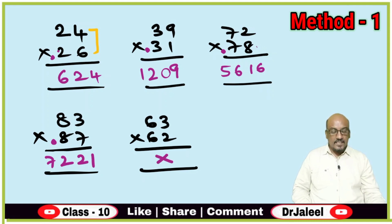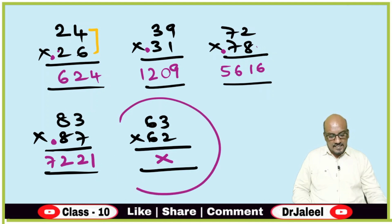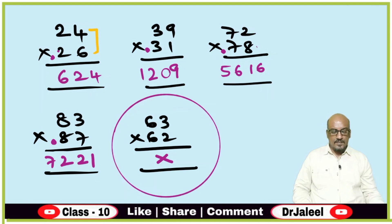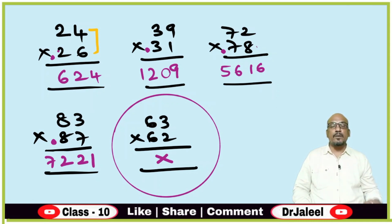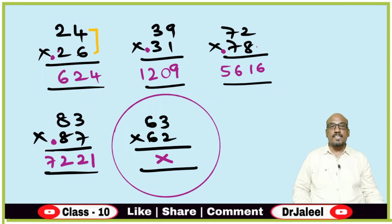Now, what about numbers where you cannot use this method? For those kinds of problems, we have the second method. The second method is a universal method which can be applied to any two-digit number multiplied with any other two-digit number. There are no conditions to follow for the second method, so please concentrate on it.